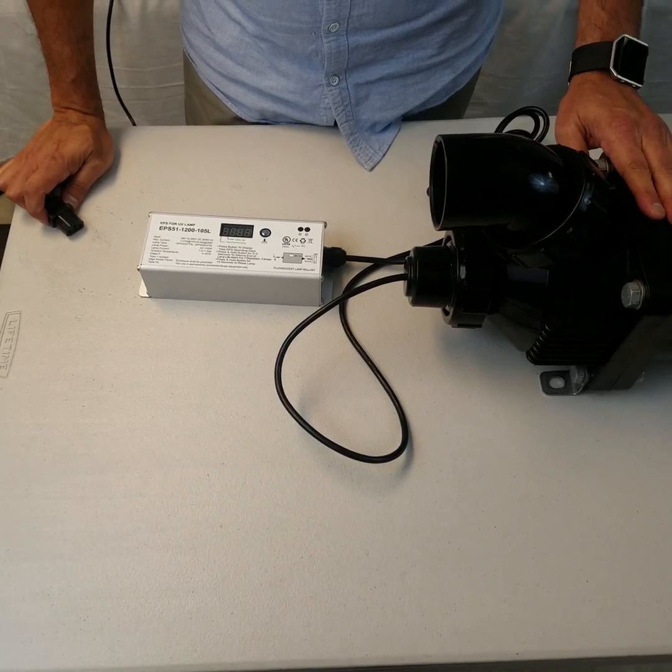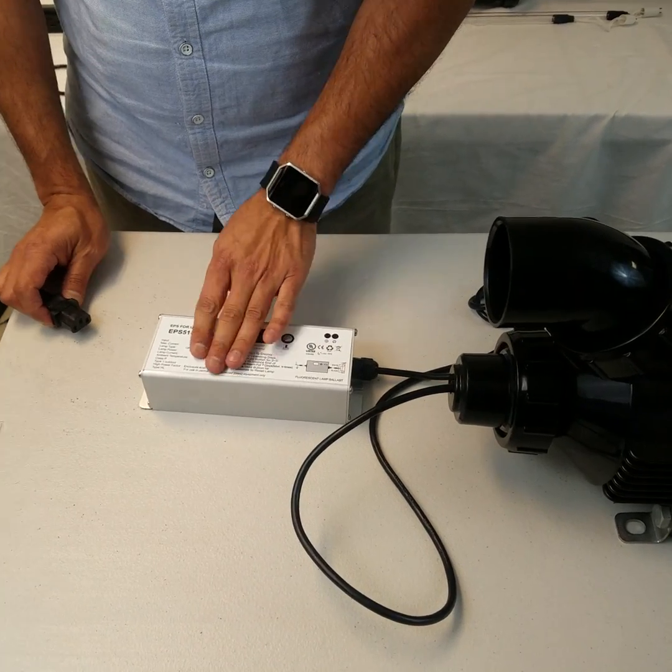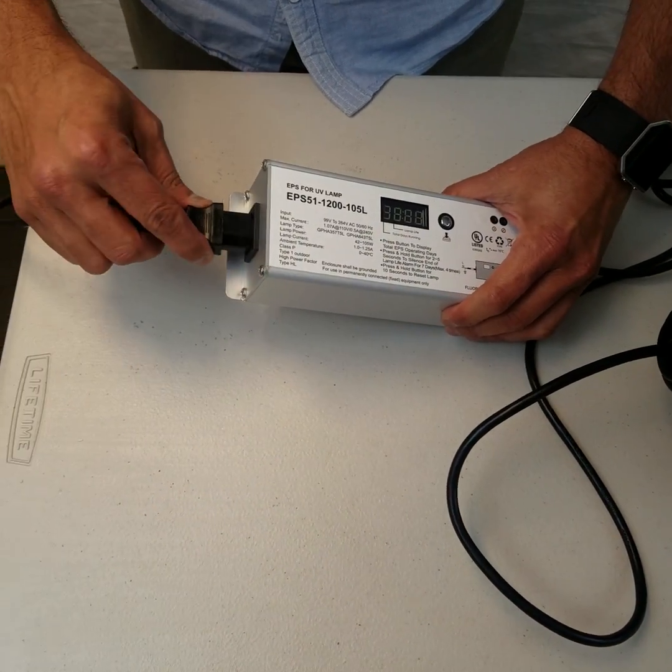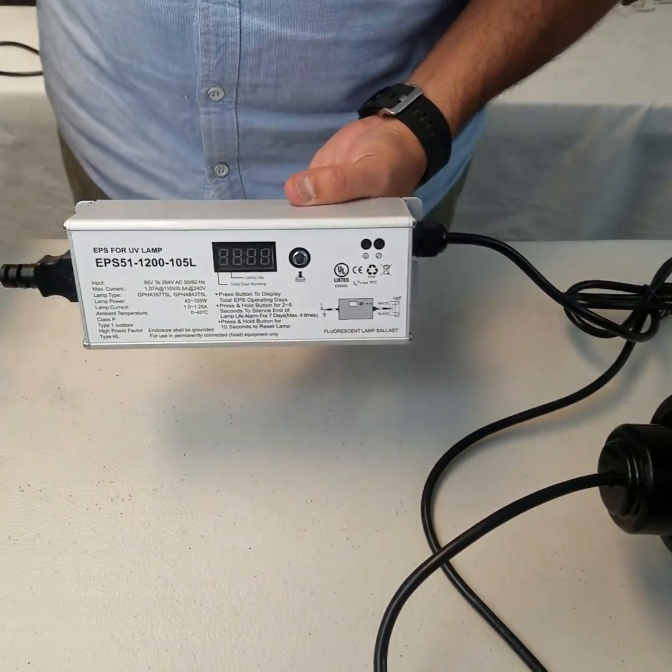Once your UV is plumbed and installed properly, take your ballast. This particular ballast comes with amalgam UVs only. Put the power connection in here. Make sure it's installed in a place where moisture cannot get in there.